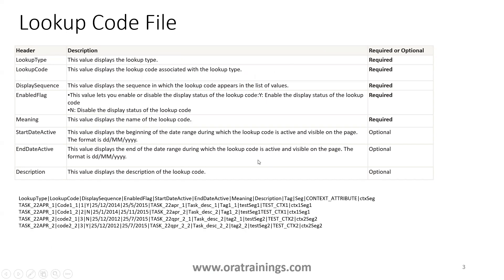It also has some extra information — if you observe, you can see tag, sequence, and context, which are DFF values that can also be provided. In our sample today, we'll just upload only the mandatory lookup values and ignore the remaining ones.